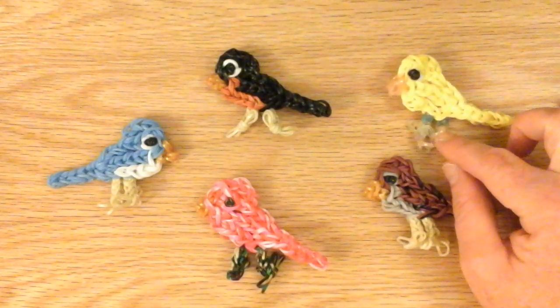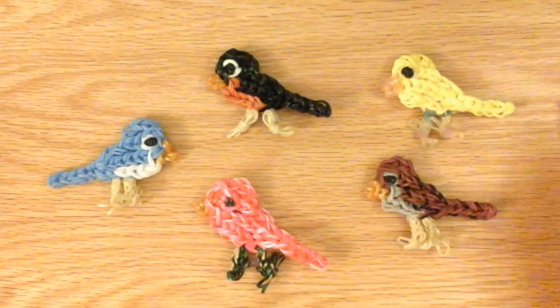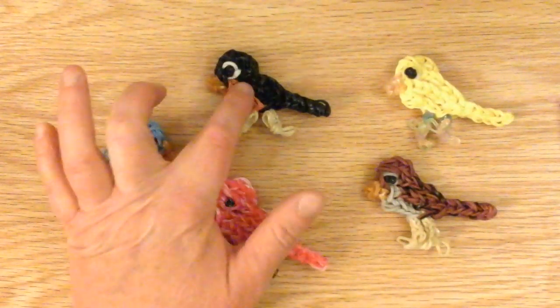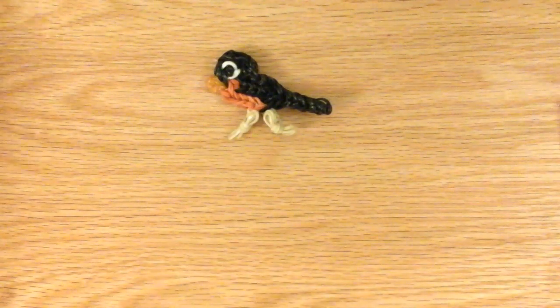I also added some glitter bands for the feet and the beak. So today I'll be showing you how to make the American Robin and you can pick whatever colors you want.